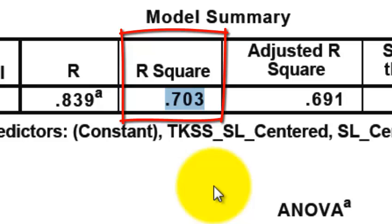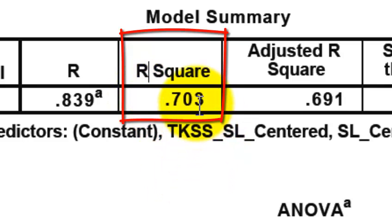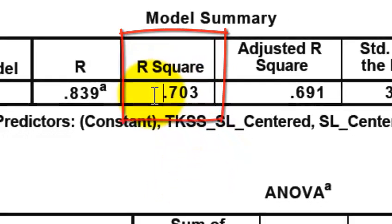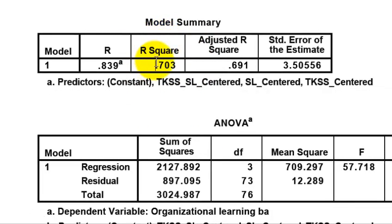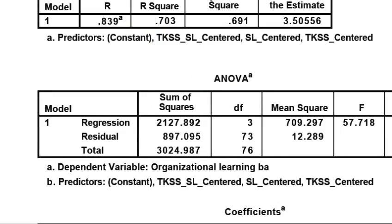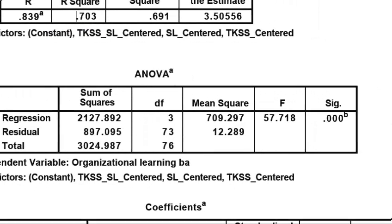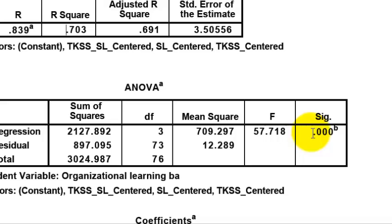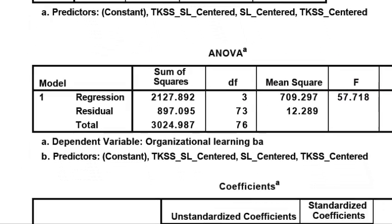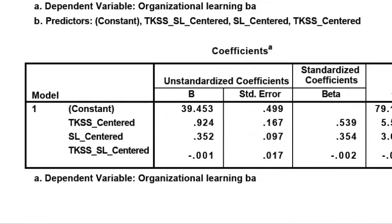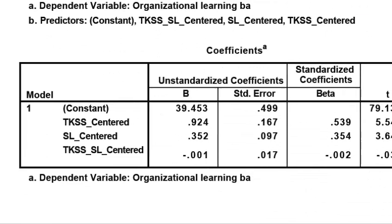This is huge — in fact, it's unheard of big. Your R-squared is huge, which means your model is very, very strong. And you have a significant ANOVA — that's your F — so that tells you that your regression model is a significant regression model.